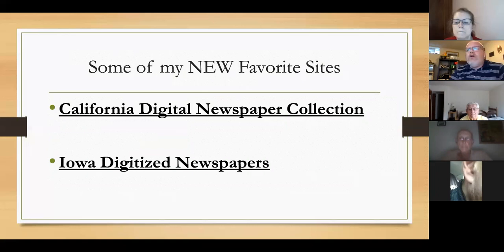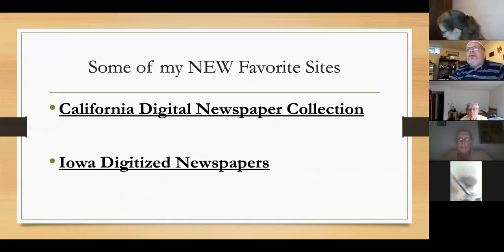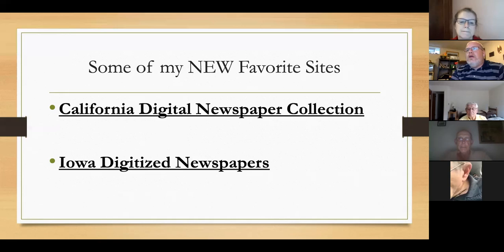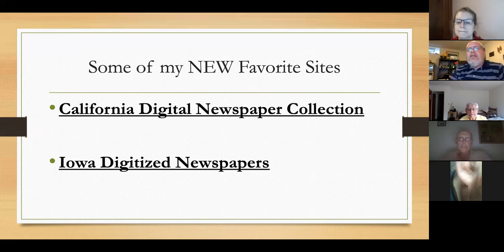These are two news sites I recently found. I was having a hard time finding articles or obituaries for relatives in California, so I did a Google search and found the California Digital Newspaper Collection — a great free site. If you have relatives throughout California, they have newspapers not offered on some paid sites. Also, the Iowa Digitized Newspaper Project has newspapers based on counties. I've started looking there for relatives, and I'll share a story about a relative from Iowa in a little while.